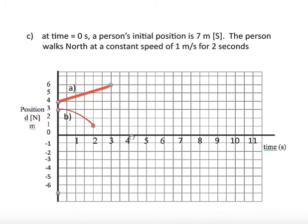Example C. At time equals 0 seconds, a person's initial position is 7 meters south. South would be a negative position. And so, here's 7 meters south. The person walks north at a constant speed of 1 meter per second for 2 seconds. So, every 1 second, the person advances north by 1 meter. 1 second later, 1 meter north. Another second later, 1 meter north. How do we connect those dots? Well, we use a straight line. Why do we use a straight line? Because the key phrase here is constant speed. Please also try examples D and E.